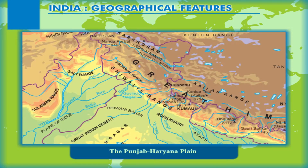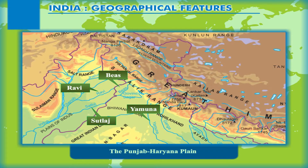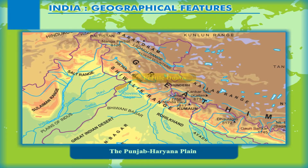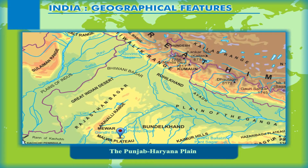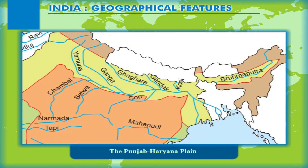The Punjab-Haryana plain is formed by rivers Satluj, Beas and Ravi, and is bordered by River Yamuna towards its east. The plains are made up of fertile doabs between Ravi and Beas rivers, and the Bist doab between Beas and Satluj. The Malwa plain also forms a part of this subdivision. The Punjab-Haryana plains are irrigated mainly through a network of canals. There are many low-lying flood plains in this region which are called Baits.